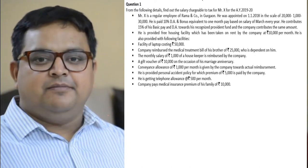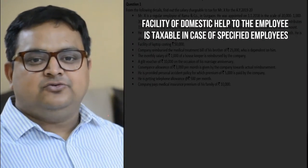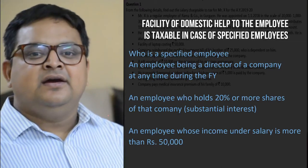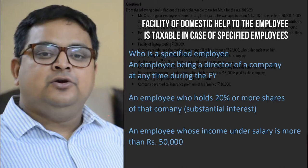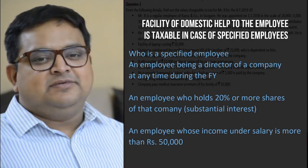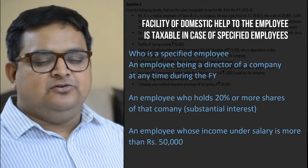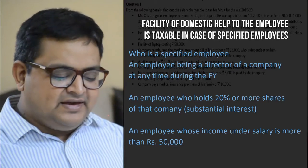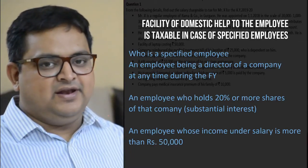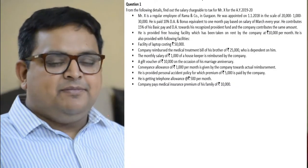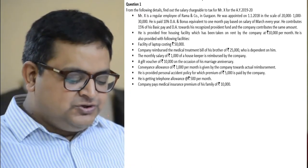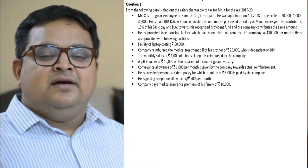The monthly salary of ₹1,000 for a housekeeper is reimbursed by the company. Domestic servants — cook, gardener, sweeper — if provided to employees, are taxable only in the hands of a specified employee. A specified employee is: (1) an employee who is also a director of the company, (2) an employee who has a substantial interest in the company (20% interest), or (3) an employee whose income under salary exceeds a specified limit. This perquisite will be taxable in their hands. If it were a non-specified employee, it would not be taxable.